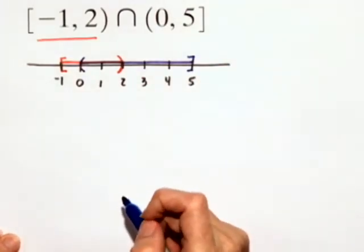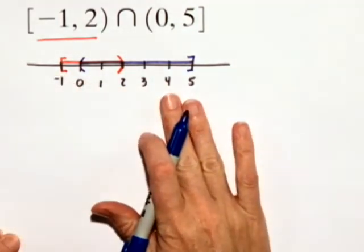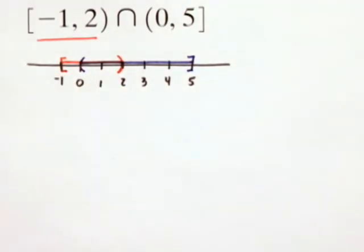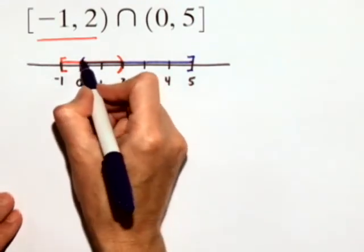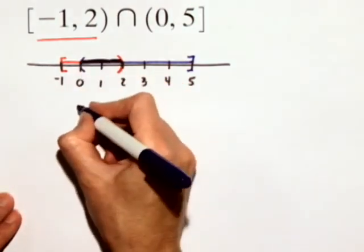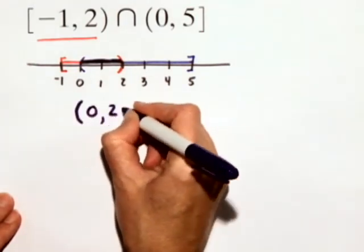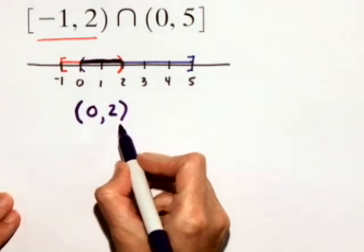The intersection of two sets contains elements common to both the first set and the second set. The only elements that are common to both the first and the second are these elements right here, where the overlap occurs, so that would be in the interval from 0 to 2, not including either endpoint.